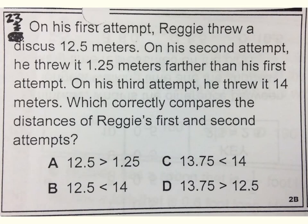Number twenty-three. On his first attempt, Reggie threw a discus twelve and five-tenths meters. On his second attempt, he threw it one and twenty-five hundredths meters farther than his first attempt. On his third attempt, he threw it fourteen meters. Which correctly compares the distances of Reggie's first and second attempts?